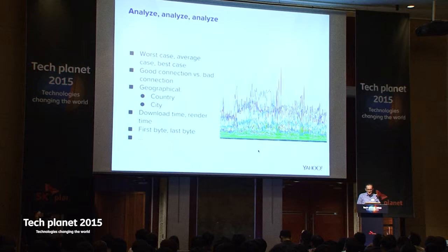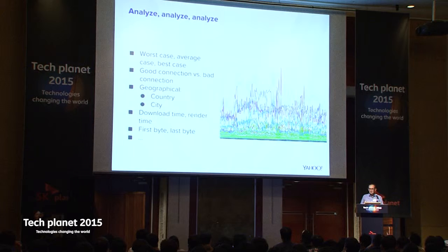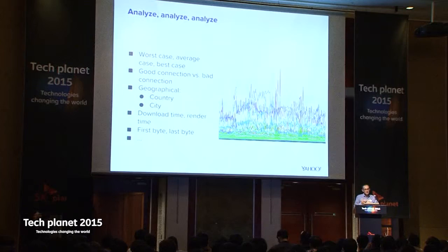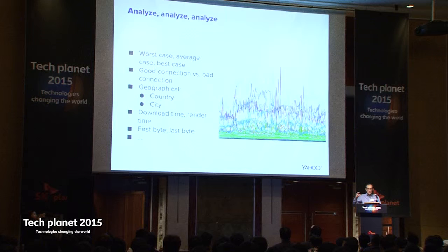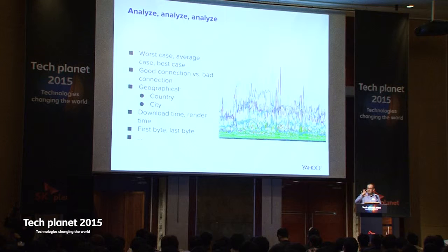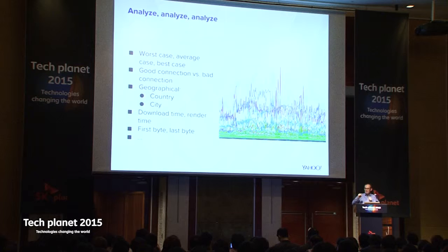If you do all this, you get a lot of data points. Analyzing takes quite a lot of time: you need to look at worst case, average case, best case, people with good connections and people with bad connections. Looking at things geographically is very important — things could be fast in South Korea but slow in Singapore, or fast nationally but slow in Seoul specifically. We looked at data by country, by city, measuring download time, render time, first byte, and last byte. You can spend a lot of time on those graphs, but you get a lot of insights.